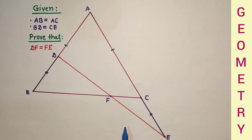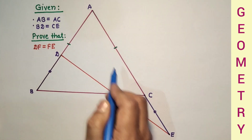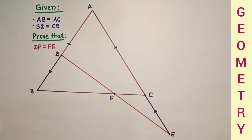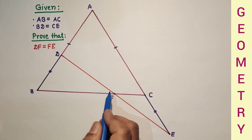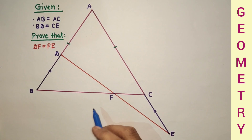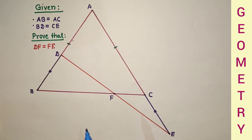Hi everyone, welcome to my YouTube channel. We are given an isosceles triangle ABC in which AB is equal to AC. Segment BD is equal to CE, and we have to prove that DF is equal to FE. This is not a difficult question, but the biggest challenge is how to start solving it — this has been the complaint of many of my brilliant students.